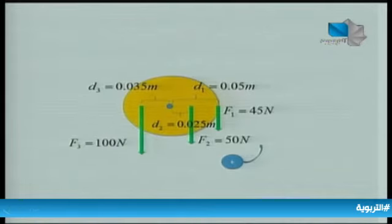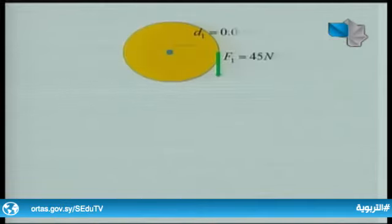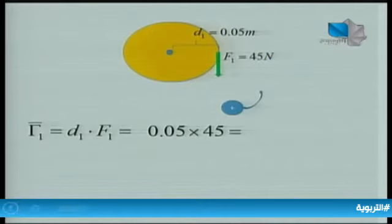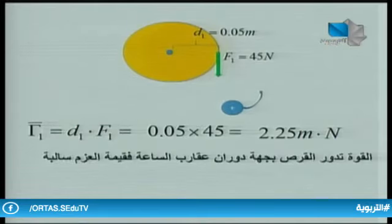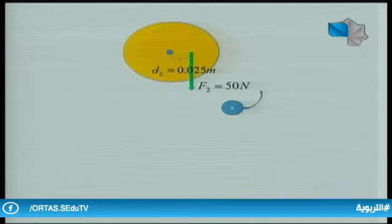بما أن الحركة دورانية فإننا نختار اتجاهاً موجباً، عادةً هو بعكس عقارب الساعة. لحساب عزم القوة الأولى نطبق: م1 = D1 × F1 = 0.05 × 45 = 2.25 متر·نيوتن. وبما أن القوة الأولى تحرك الجسم بعكس الاتجاه الموجب، فإن العزم يكون سالباً.